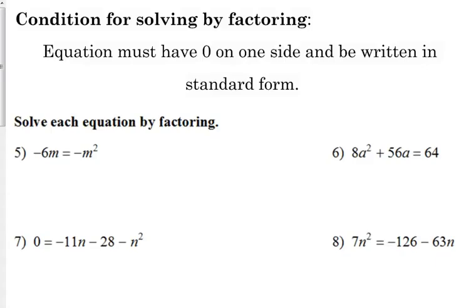An example like number five here: negative 6m is equal to negative m squared. Now, you have a choice here. You can move this to either side.